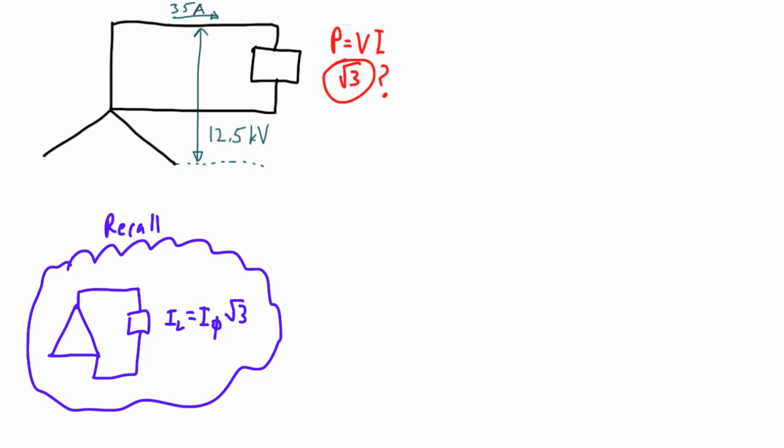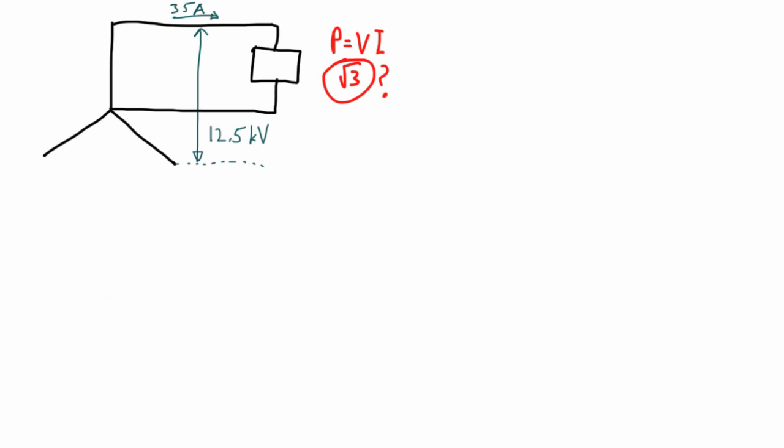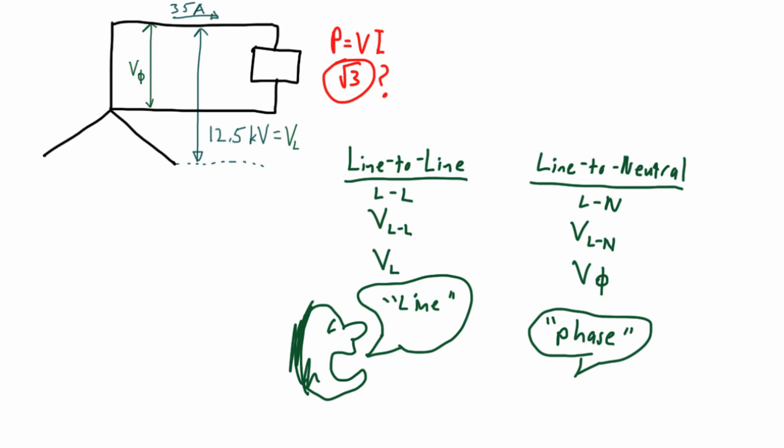Okay, but back to our problem in question. Because the load is connected line to neutral, we need the phase voltage. Now recall what we just said about what these connections are called. Line to neutral connections are called phase connections. So this means we need to convert the given line voltage to phase voltage.